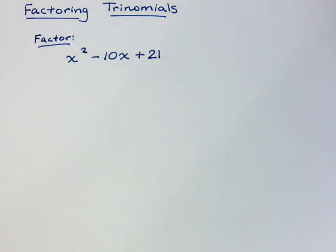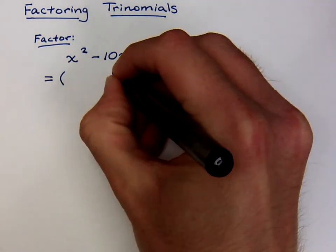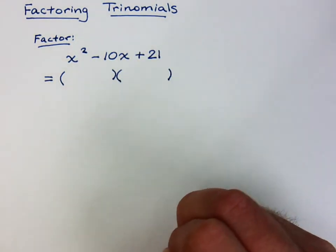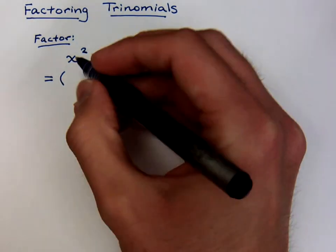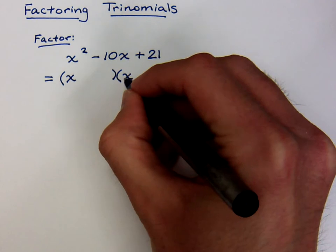Since they don't have anything in common, we recognize that it's a trinomial, and we understand that most of our trinomials, if they factor, will factor as the product of two binomials. Well, just like we saw before, the x² is going to break down as x times x.